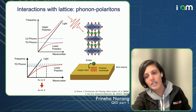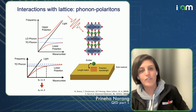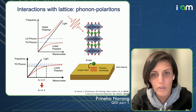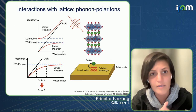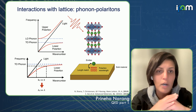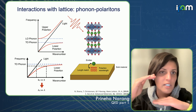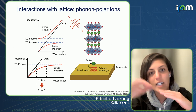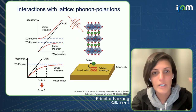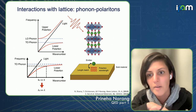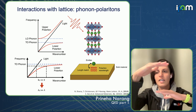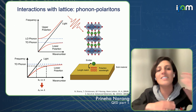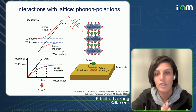For phonon polaritons: in polar materials — HBN, silicon carbide, pick your favorite — in the Reststrahlen band, there is a splitting between the longitudinal and transverse optical phonon modes, which creates a lower and upper polariton branch relative to the light line. This becomes more complicated in a 2D material where the splitting goes away, but you can still have excitation of a lower polariton. There are three advantages of phonon polaritons: they are in the near-to-mid IR where losses are not as problematic.